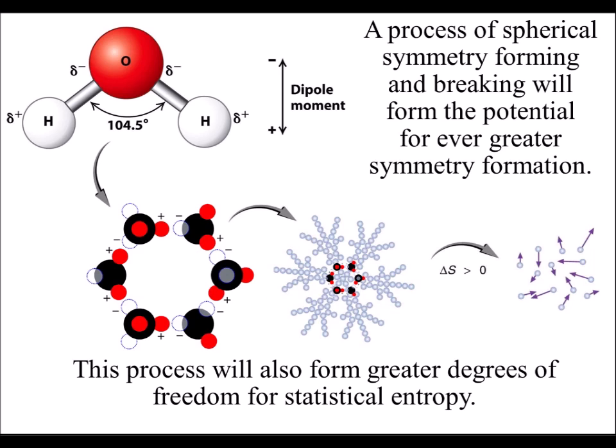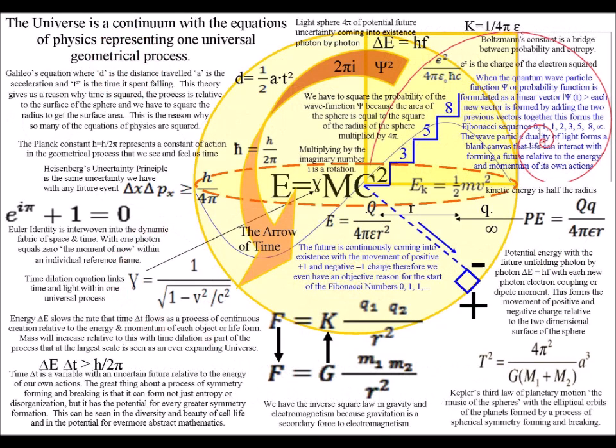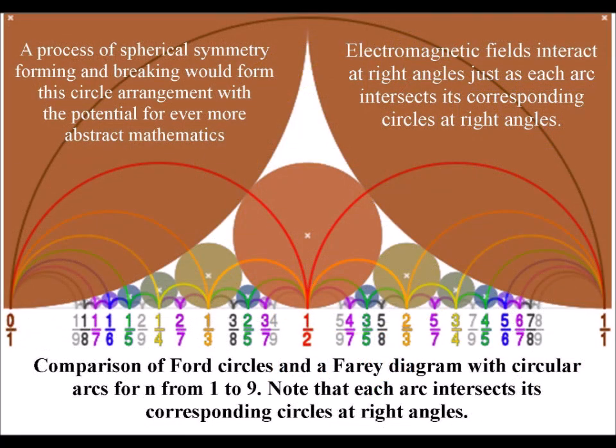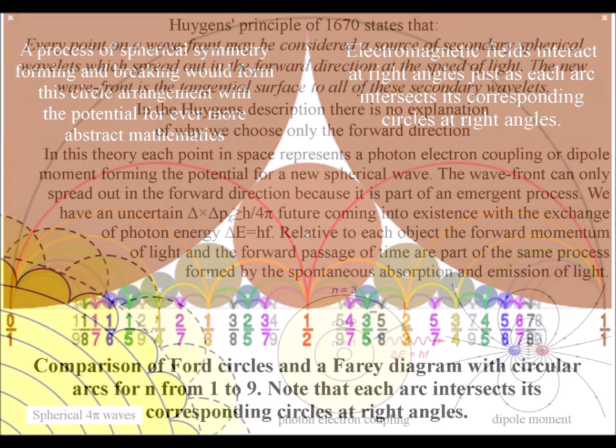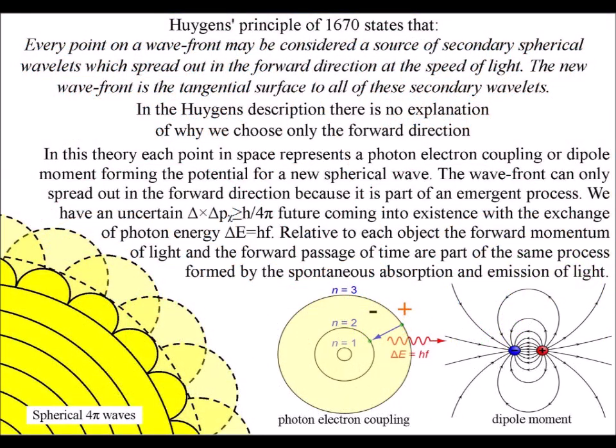This dynamic geometry even forms the potential for evermore abstract mathematics, and can be seen as fold circles. No one places the fold circles in the mathematics. They are already there, representing the dynamic geometry that human mathematics is based upon.